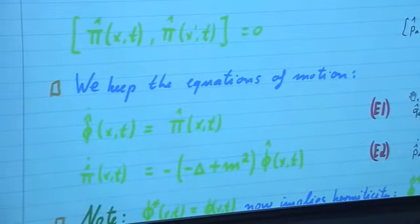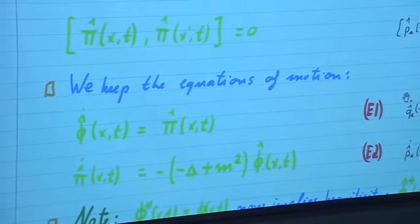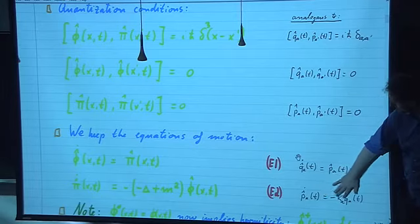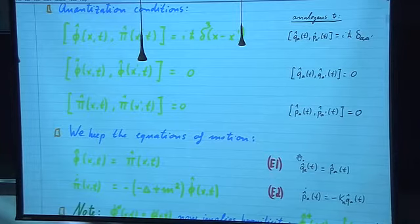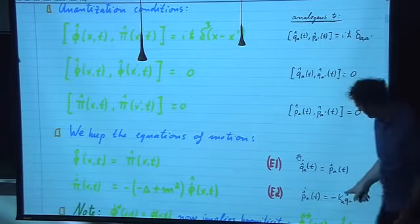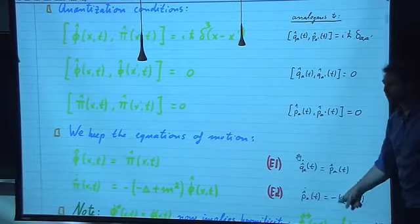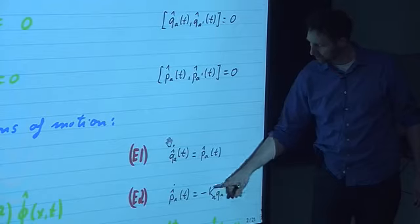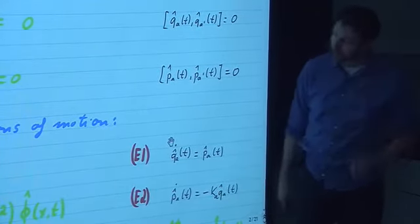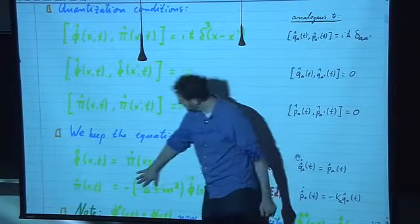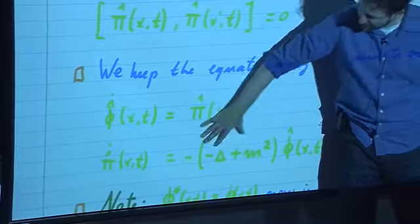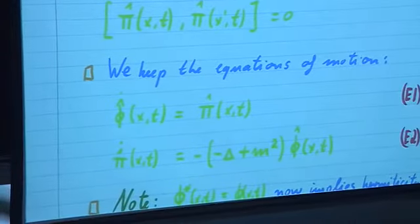That looks similar: the second derivative is proportional to minus something times the function itself, except that for ordinary harmonic oscillators in first quantization, this is a number — it's a spring constant. But for quantum fields, it's not. For quantum fields, we have this expression which is not a number.